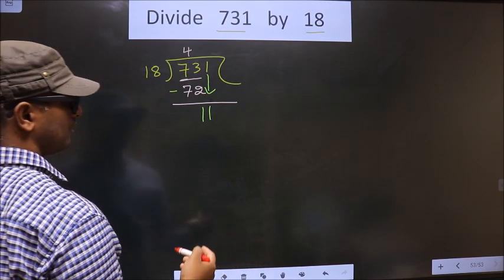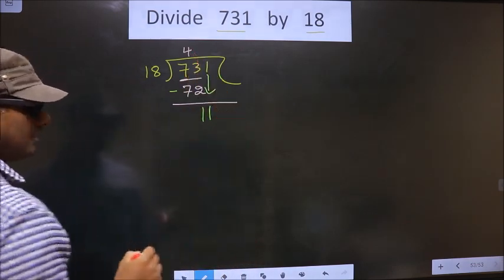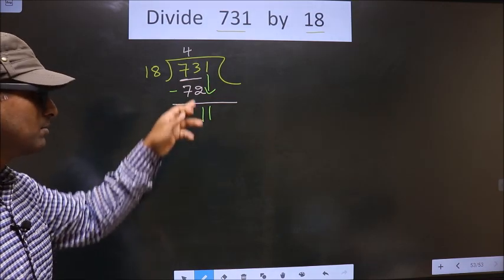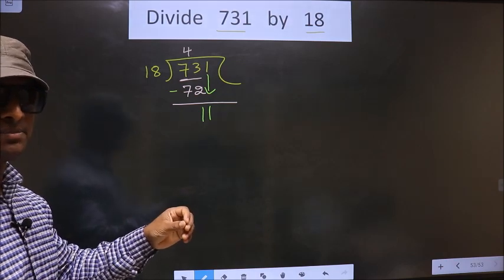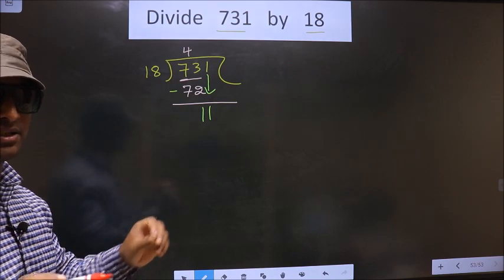The mistake is this: 11 is smaller than 18, so what many do is they put a dot and take 0 here, which is wrong. Just now you brought a number down, and in the same step you want to put a dot and take 0, which is wrong.